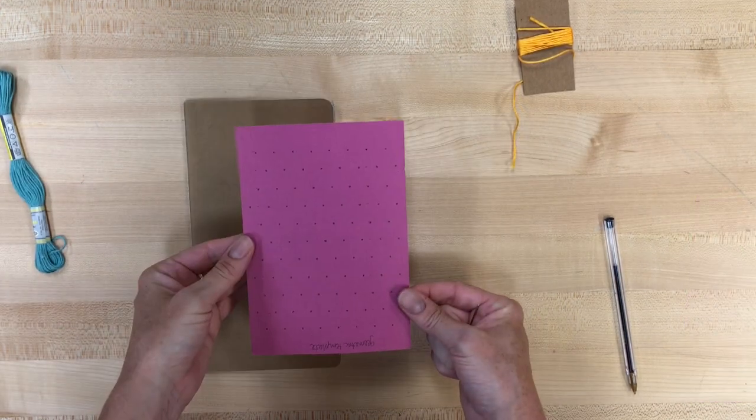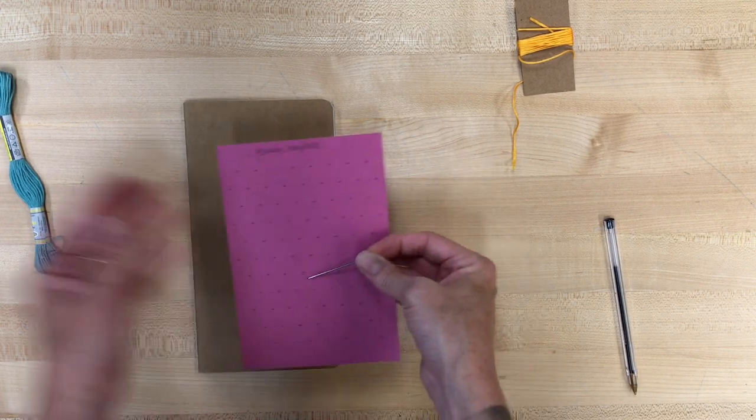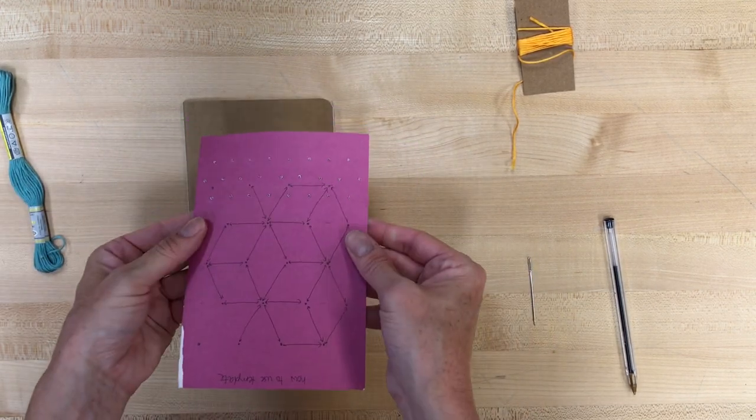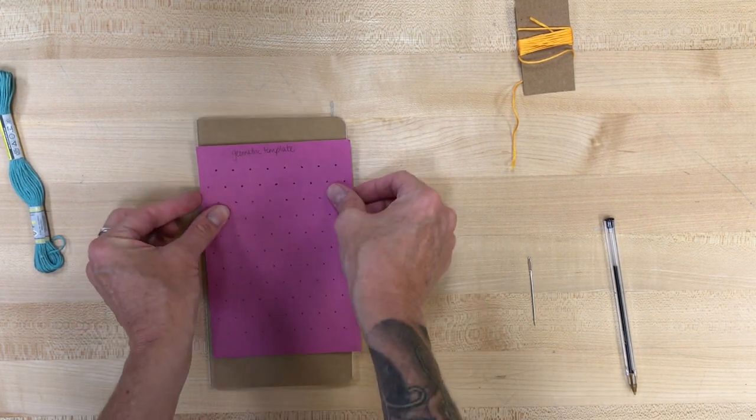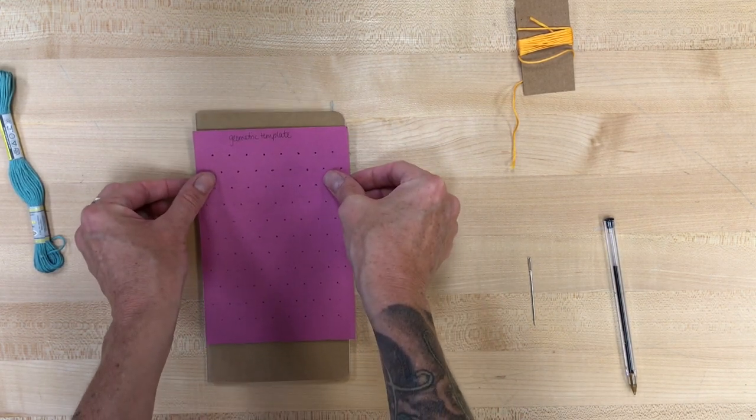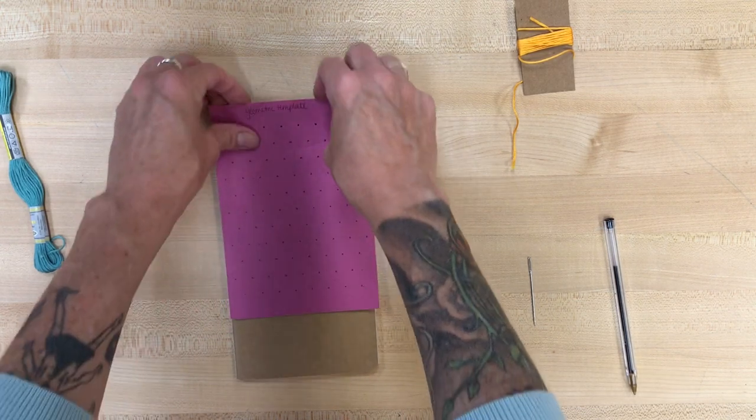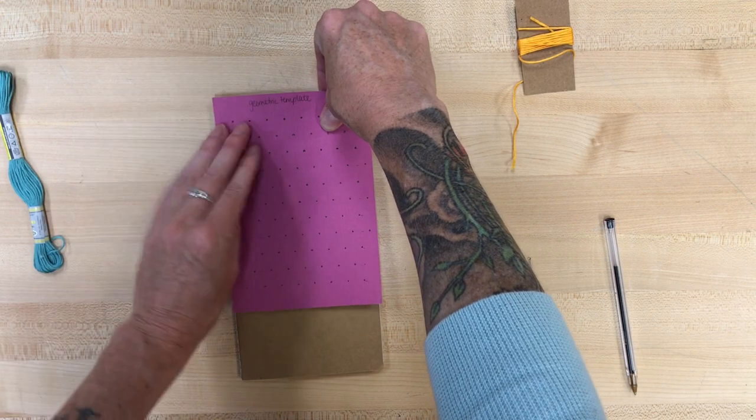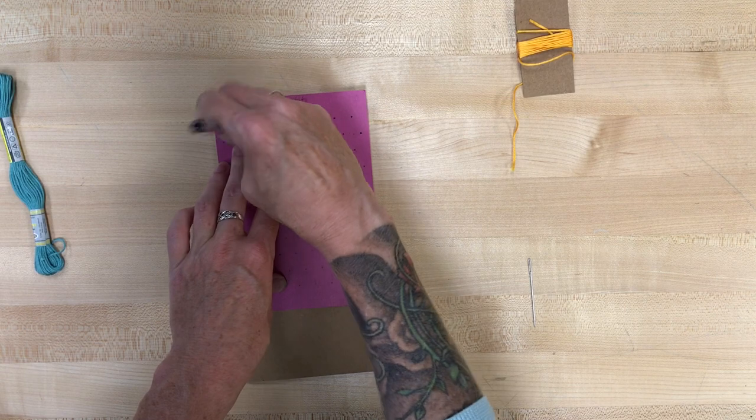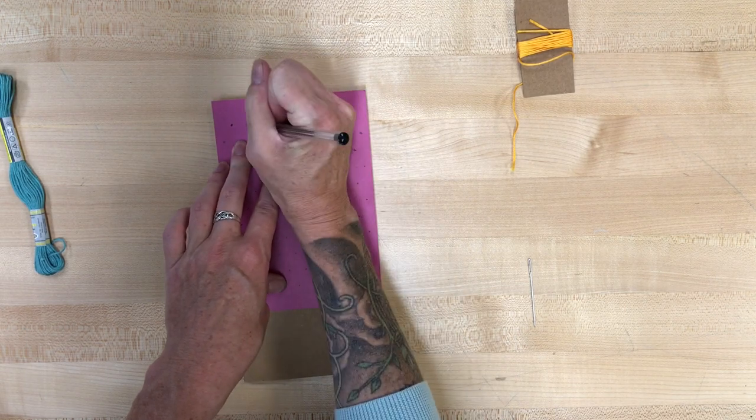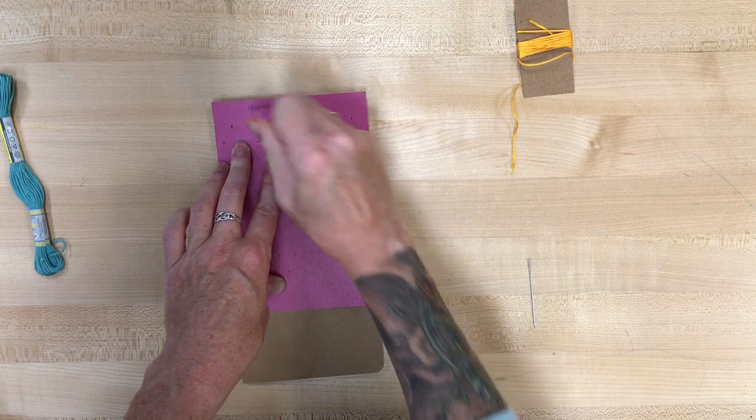If you choose to use the template, you'll poke holes with the needle where I've put all of those holes so it'll look sort of like this. And then you'll take your pen or your marker or your pencil and you'll go through those holes to mark it onto your notebook. Because the distance between all of these is a half an inch and in order to get the geometric pattern to come out correctly, I had to measure pretty precisely.